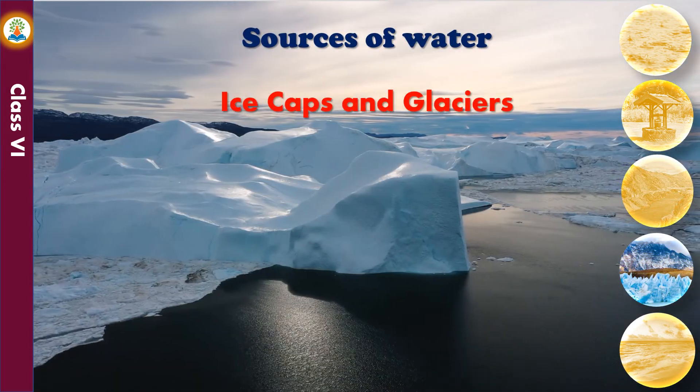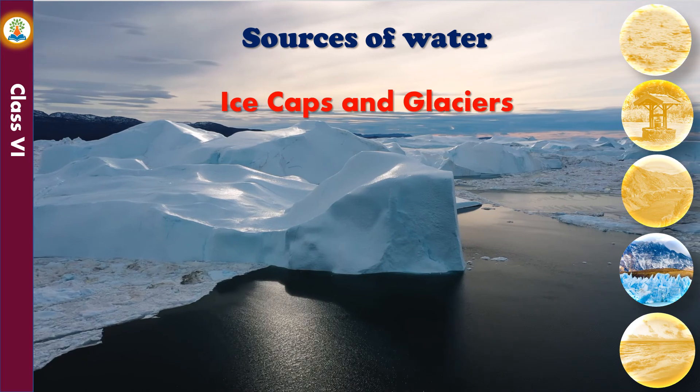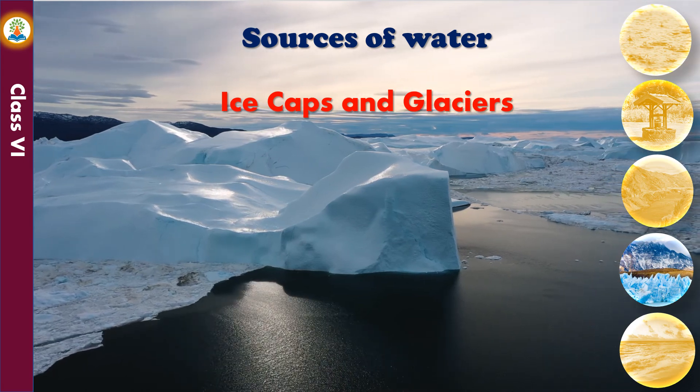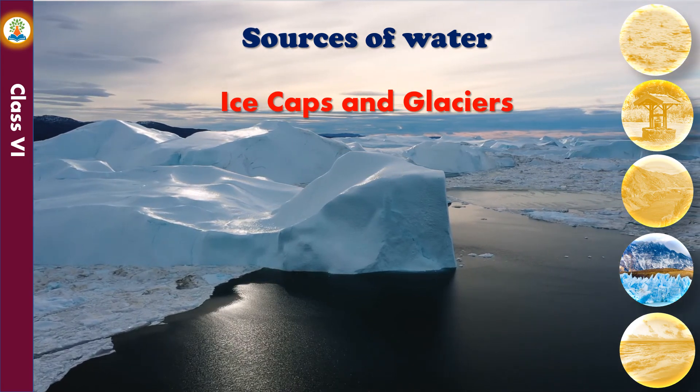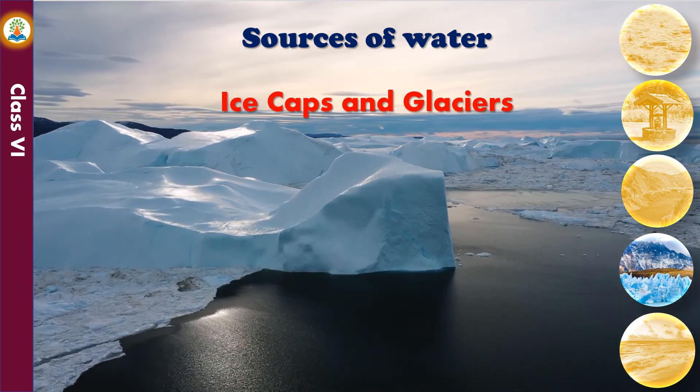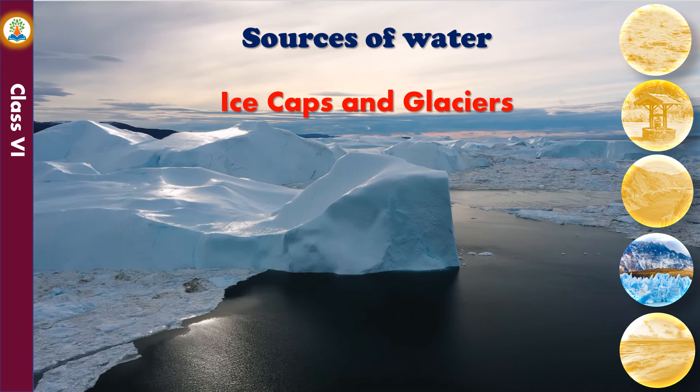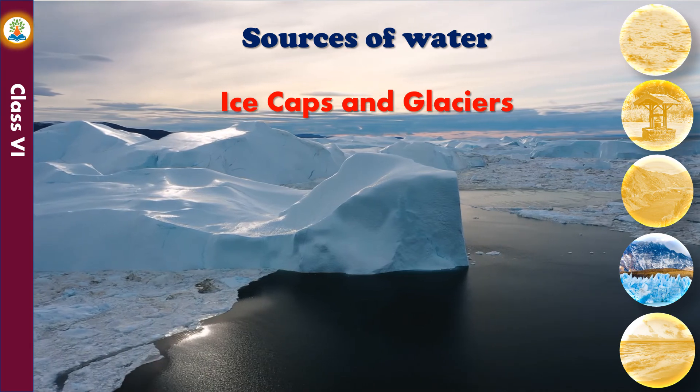About 70% of the earth's fresh water is locked in glaciers and polar caps. The Siachen Glacier in India is one of the glaciers.